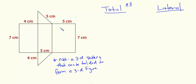So our lateral surface area would be the combined area of my three rectangles here. Total surface area would be the area of the three rectangles as well as the two triangles.